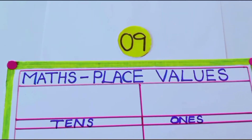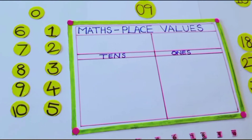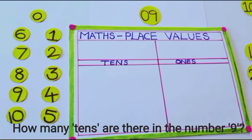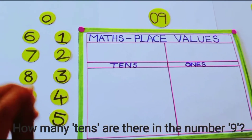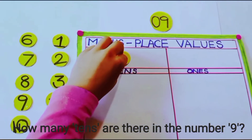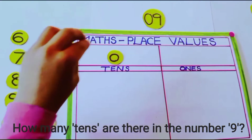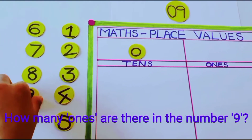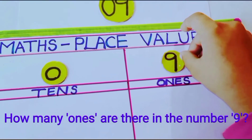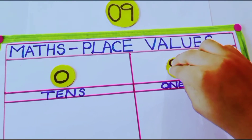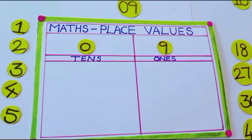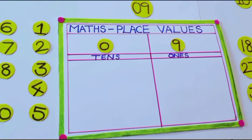What is the number here? 9. Very good. In 9, how many tens are there? 0 tens. Then how many ones are there in 9? 9 ones. Very good. Now you show me 0 tens and 9 ones.